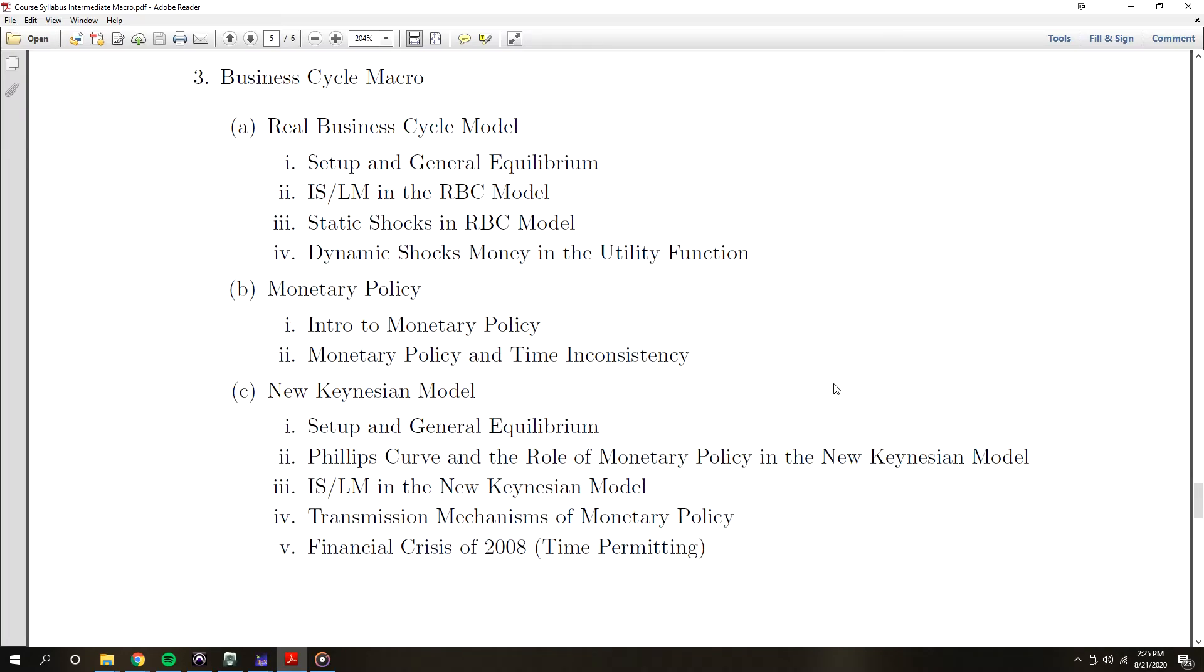Now, in business cycle macro, there are two main models that we're going to be looking at. There's the real business cycle model and the new Keynesian model. The real business cycle model came first. It developed some pretty interesting stuff in terms of the general equilibrium, and it gave some pretty interesting policy implications. However, some of these policy implications don't hold in many cases. Therefore, there was the development of the new Keynesian model, which came in and allowed for a little bit more policy intervention to actually have impact on the real economy. This is some stuff that we'll get into a little bit later, but we'll be going through these two classes of models.